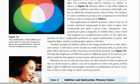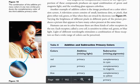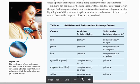Humans can see in color because there are three kinds of color receptors in the eye. Each receptor, called a cone cell, is sensitive to either red, green, or blue light. Light of different wavelengths stimulates a combination of these receptors so that a wide range of colors can be perceived.